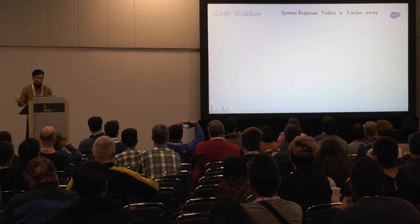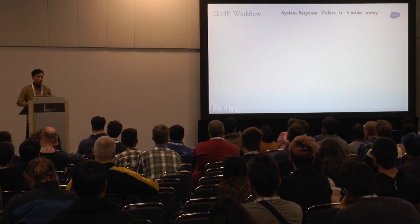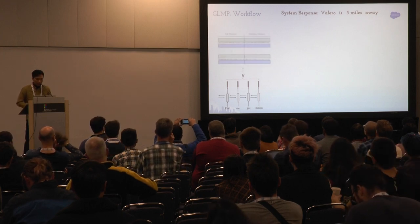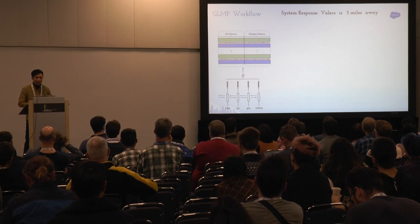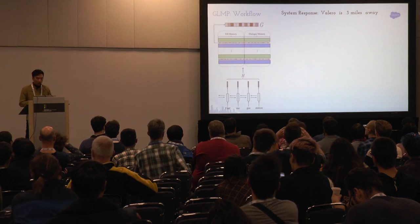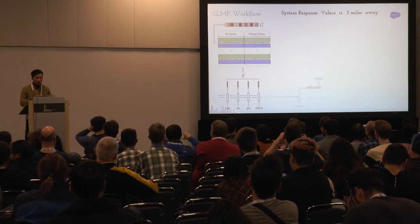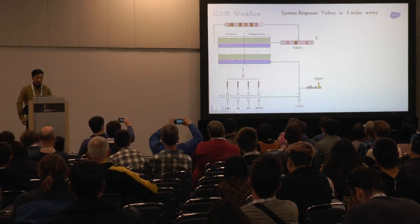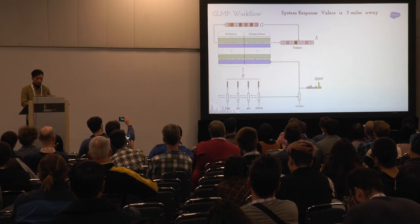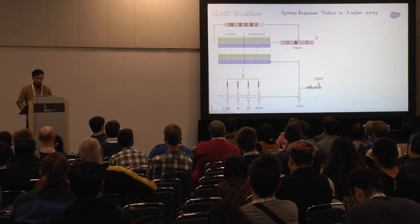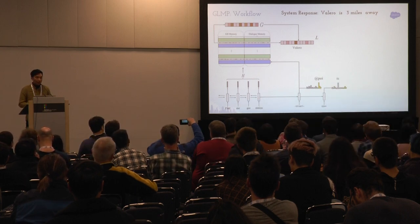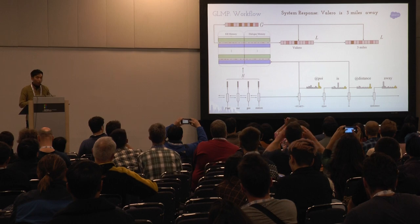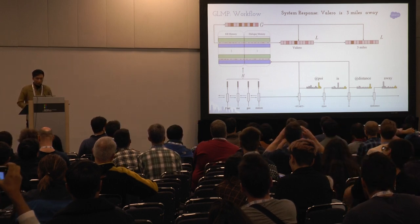Let me show a general workflow of the GLMP system. To generate 'Valero is three miles away': first, a context RNN encodes all dialogue history; then we query external knowledge and write hidden states into dialogue memory; the memory returns a global memory pointer G; we start decoding, and at each time step when an unfilled slot is generated, we use the hidden state to query external knowledge again; based on G and the query vector, we get the local memory pointer L pointing to 'Valero.' For normal vocabulary words like 'is,' we skip the query. For 'distance,' we query again and get another local memory pointer pointing to 'three miles.' At the end, we get 'Valero is three miles away.'